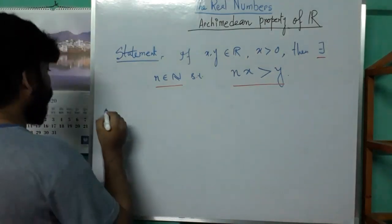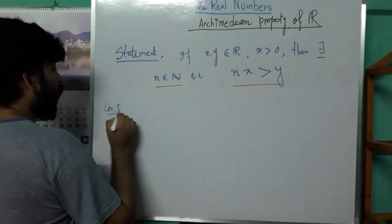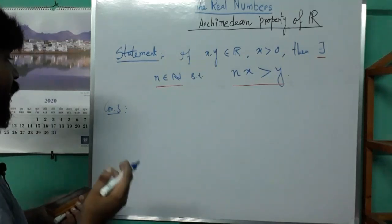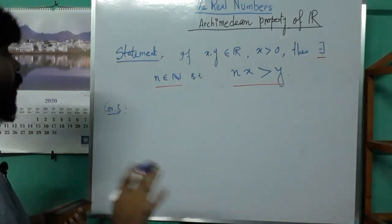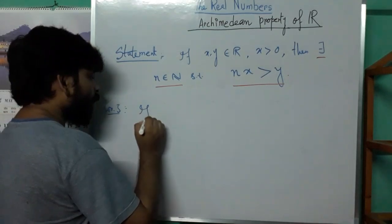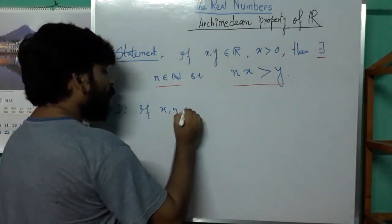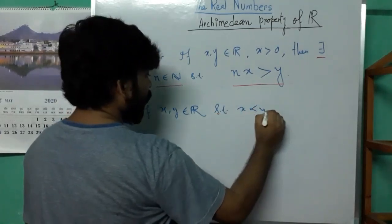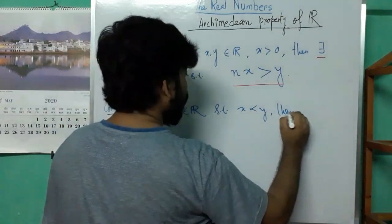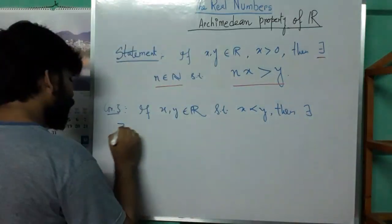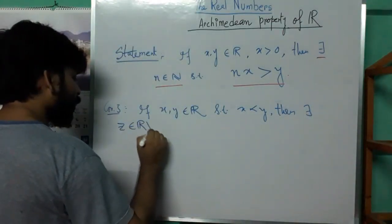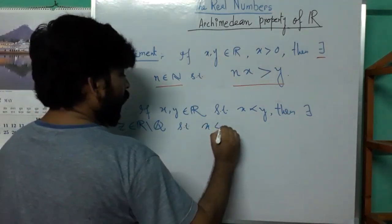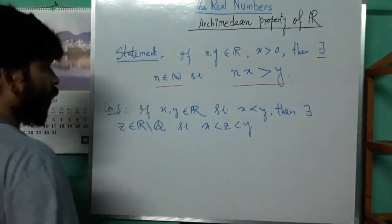Next result, again an application of the Archimedean property: between any two real numbers there exists at least one irrational number. That is, if x and y are two real numbers such that x < y, then there exists an irrational number z such that x < z < y.